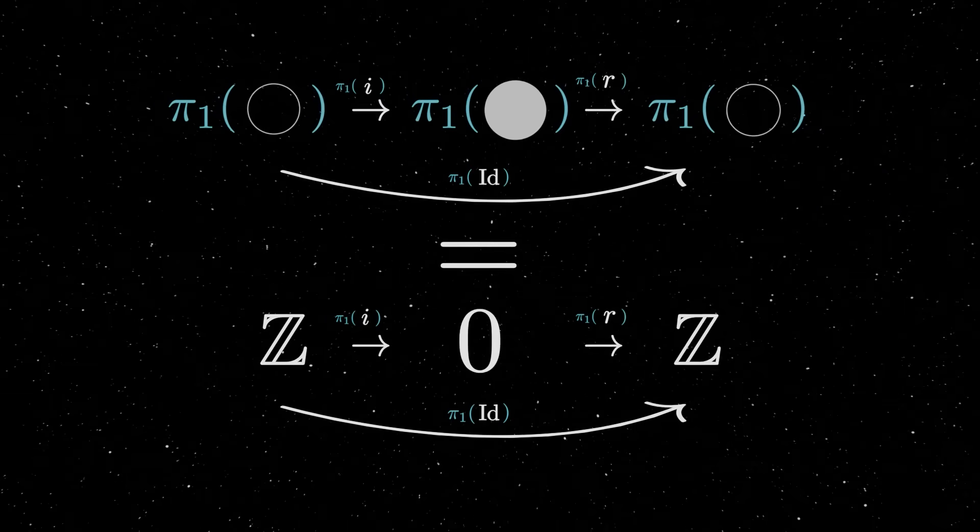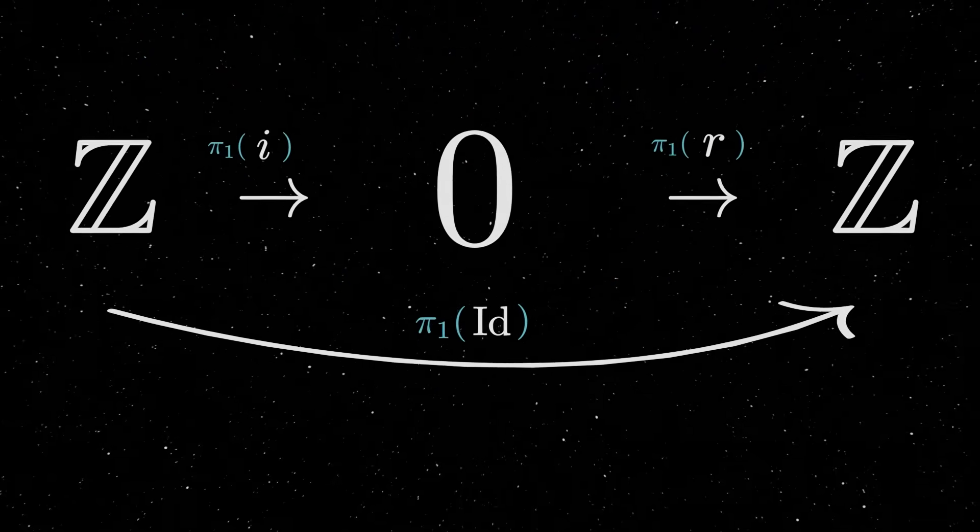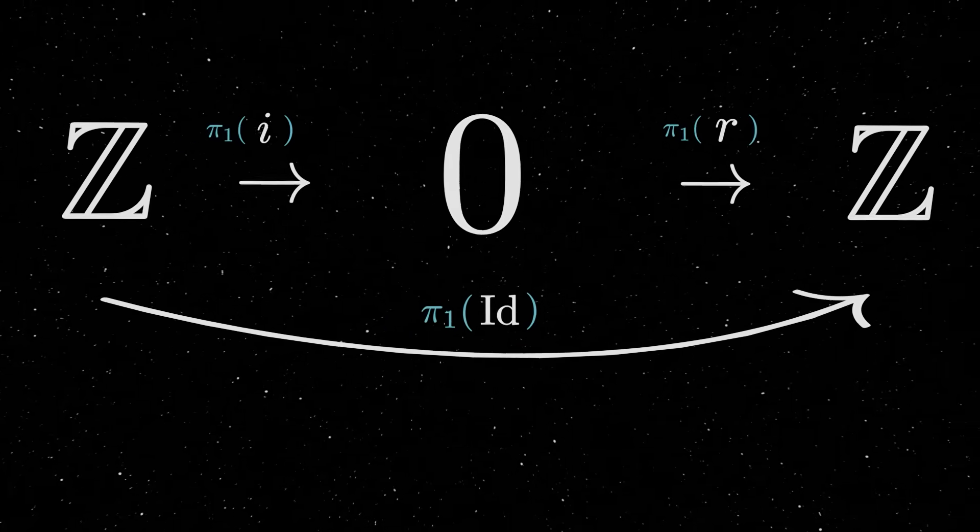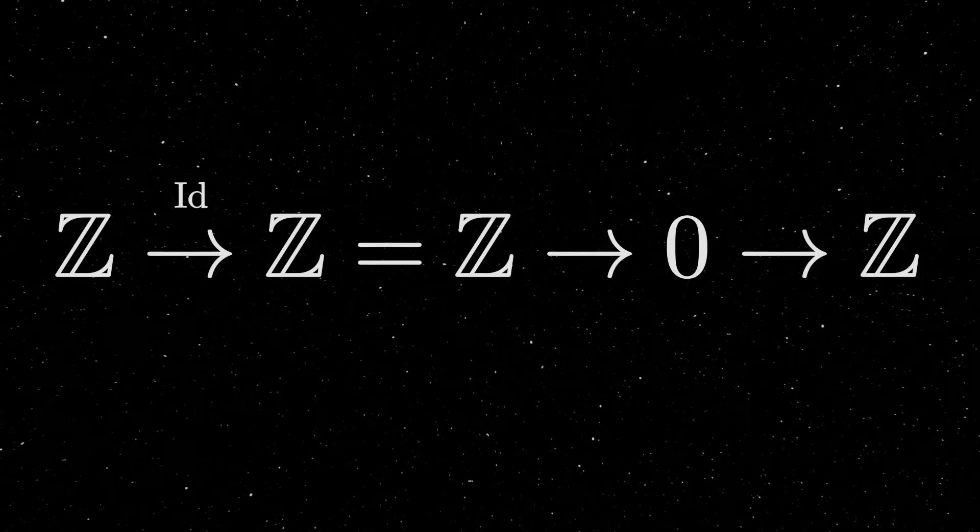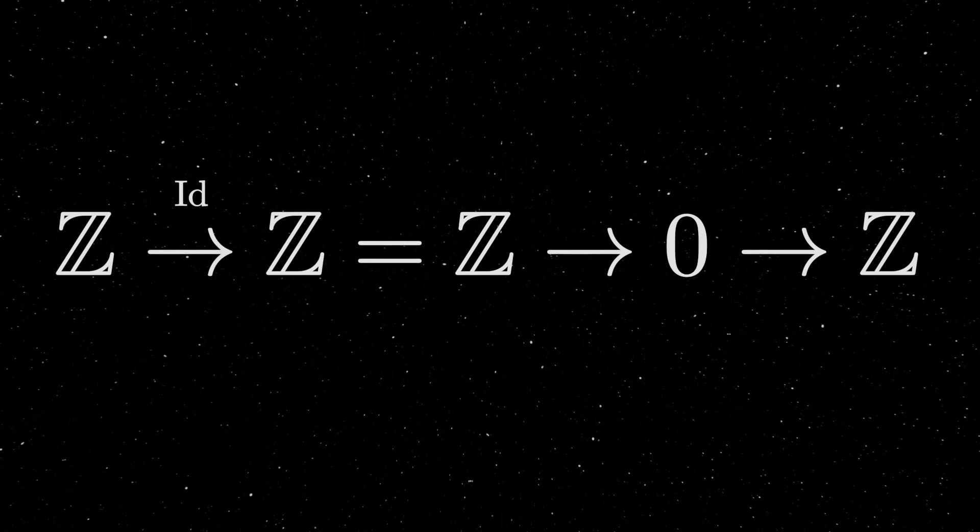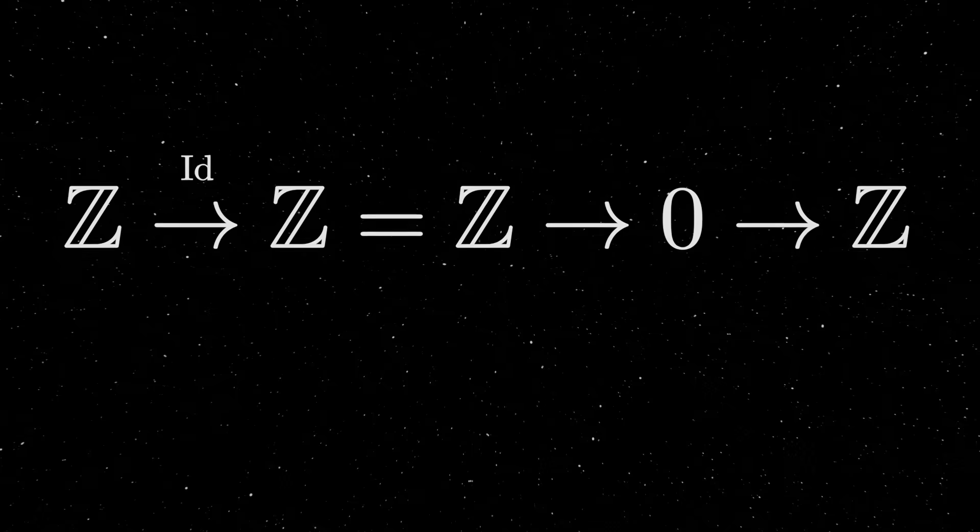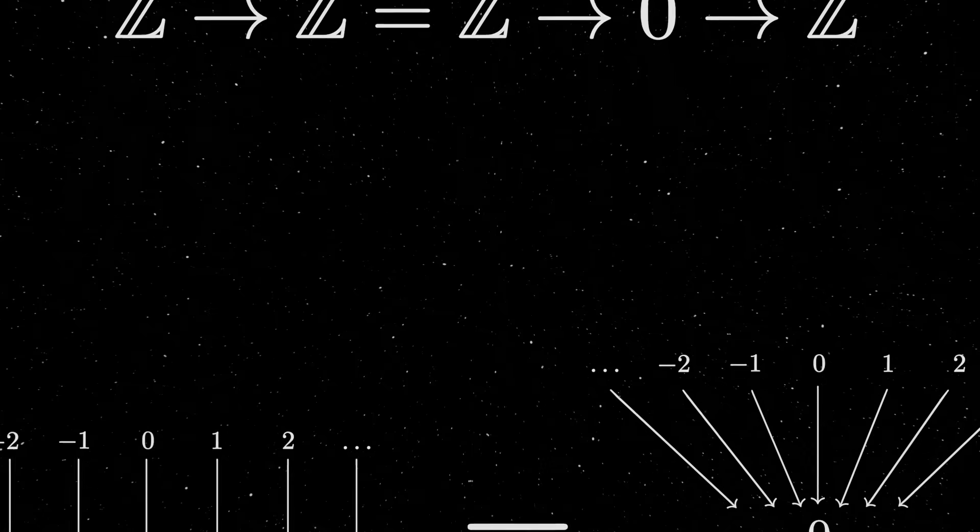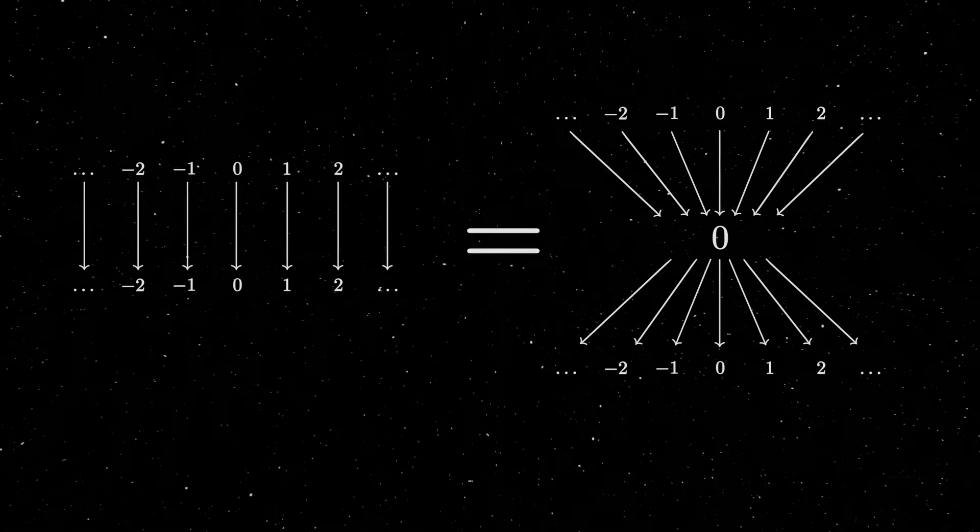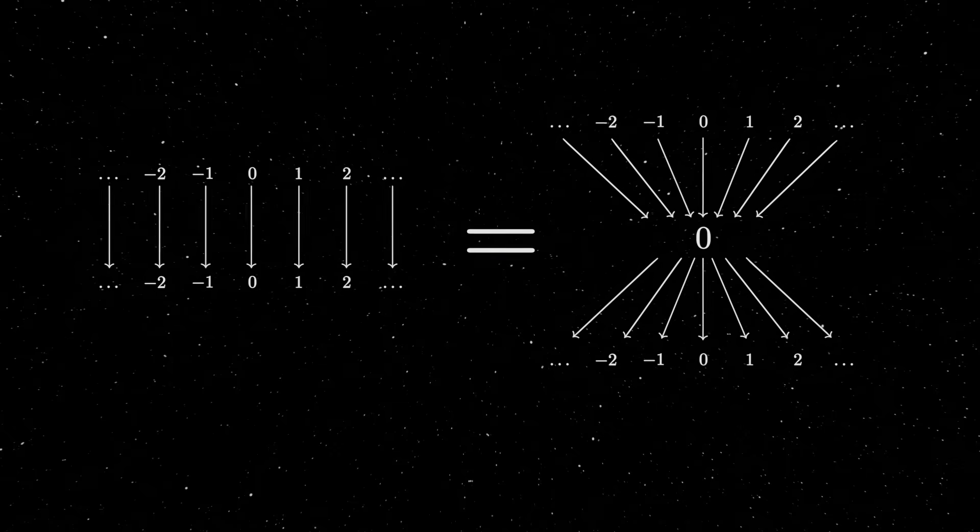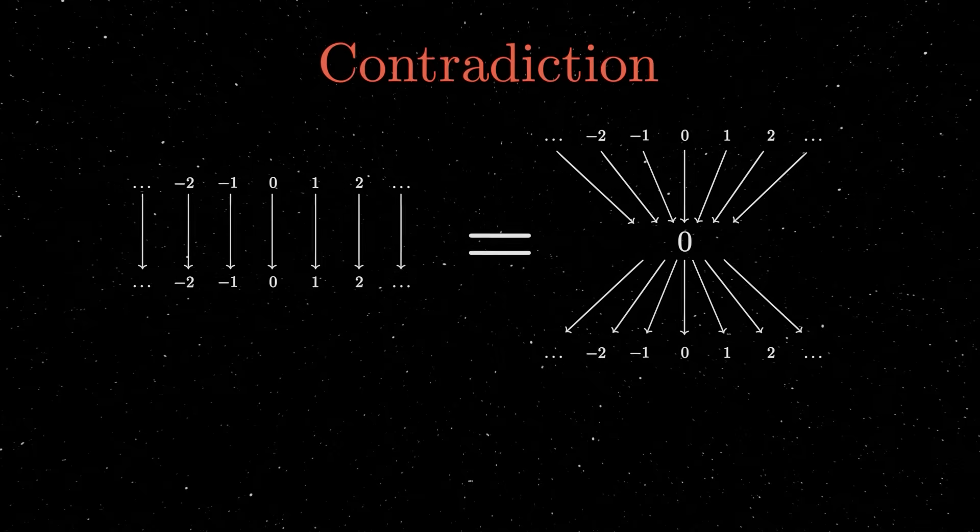The main important result here is that our maps, I and R, give us these new maps between the fundamental groups. But do you notice now that there is something strange in the diagram that we've just created? What this diagram says is that the identity function between the integers is the same as a function from the integers to zero, composed with a function from zero to the integers. But this, very obviously, can't be true, because then the function from zero to the integers would need to have several different outputs from one input. But this is no longer a function. In other words, we've reached a contradiction and finished our proof.